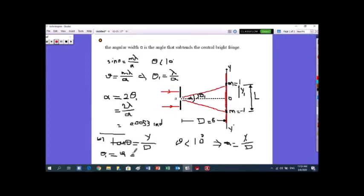Y1 equals lambda D over A. But look, the width of the central bright fringe is double Y1, because here Y1 and here Y1. So this implies L equals 2 lambda D over A.